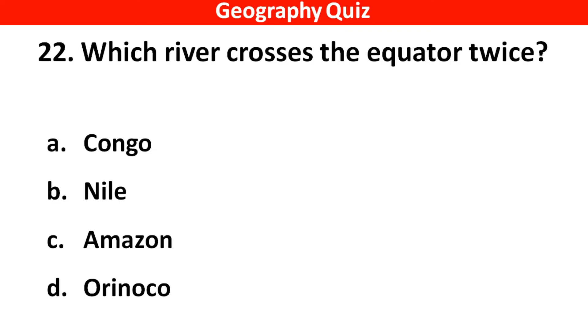Which river crosses the equator twice? Right answer is option C — Amazon.